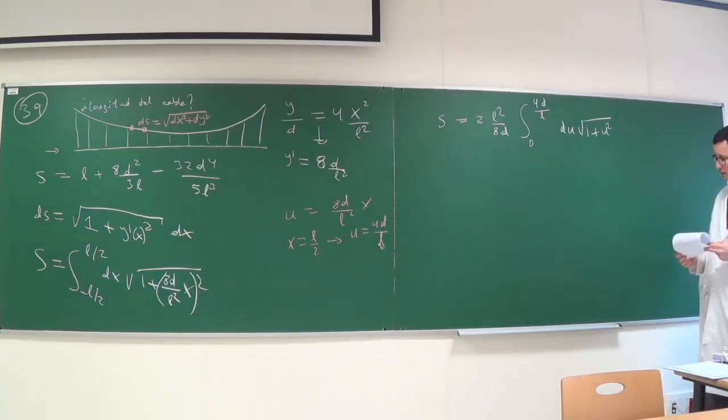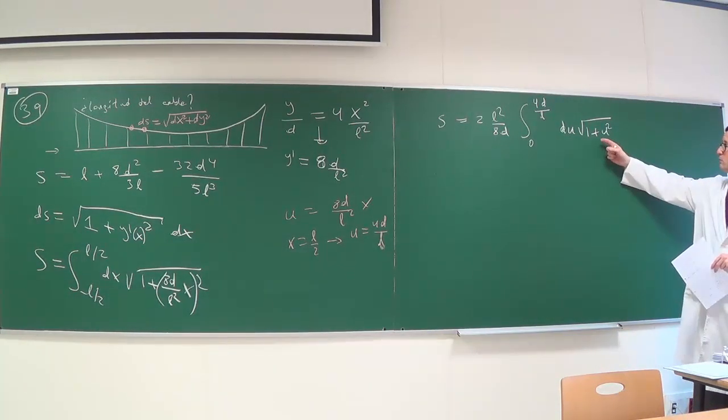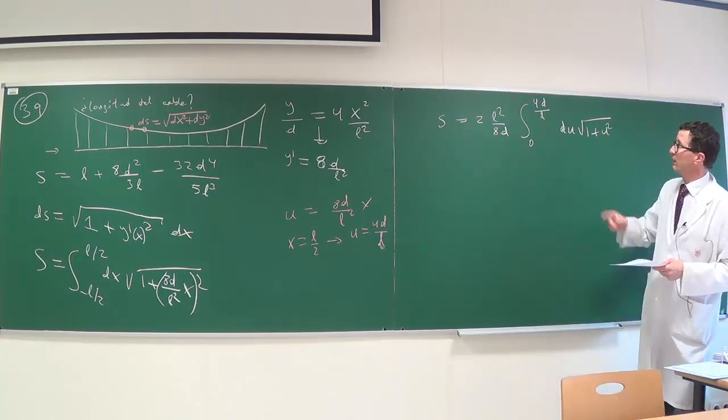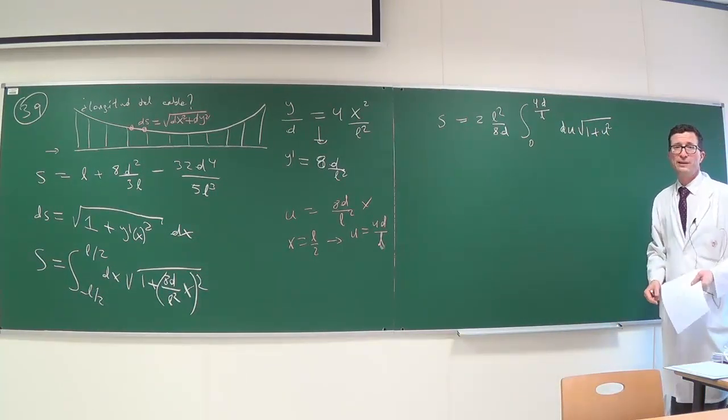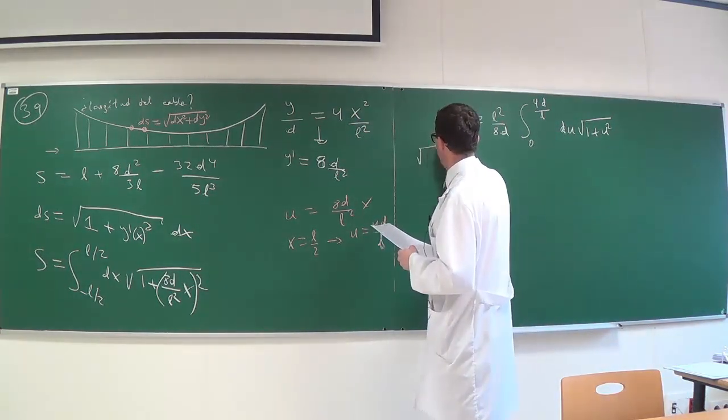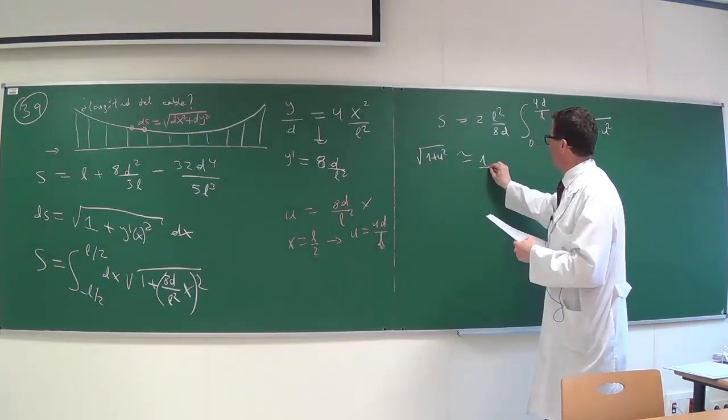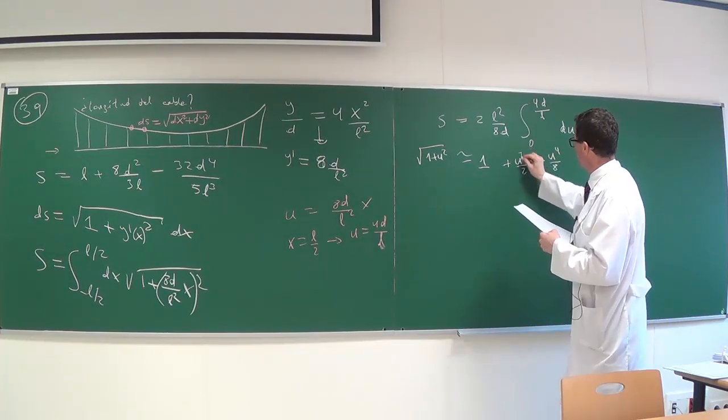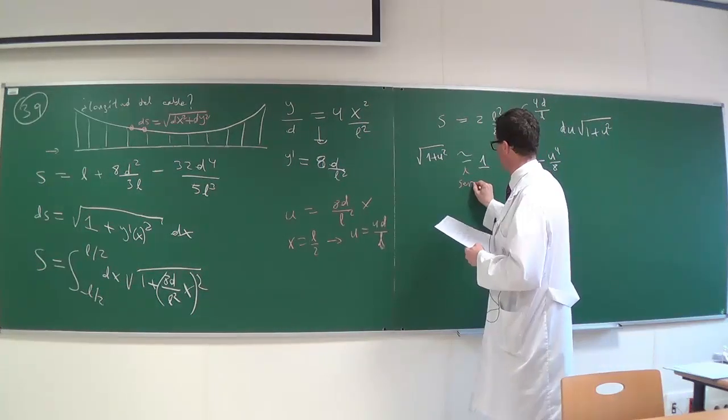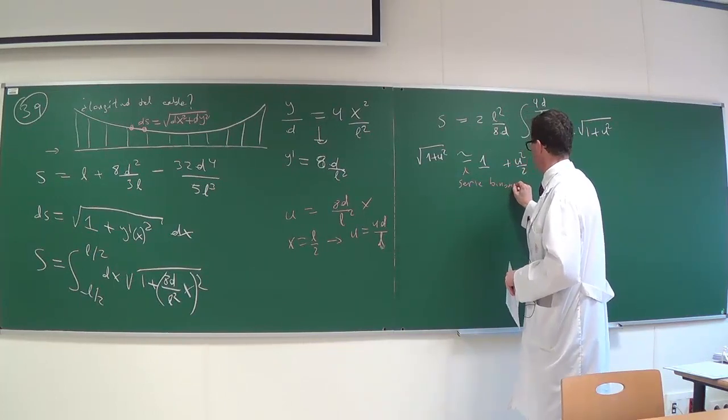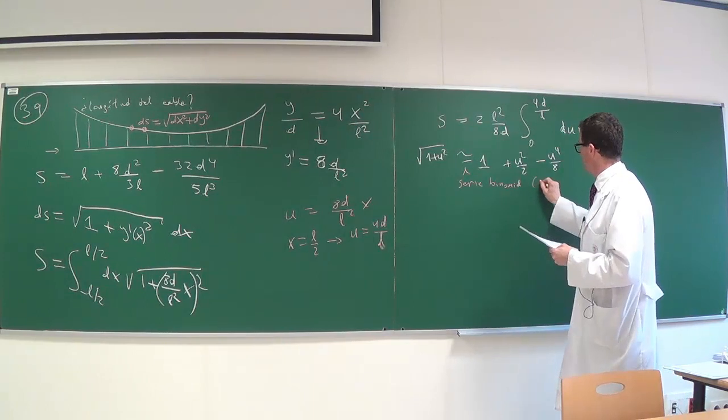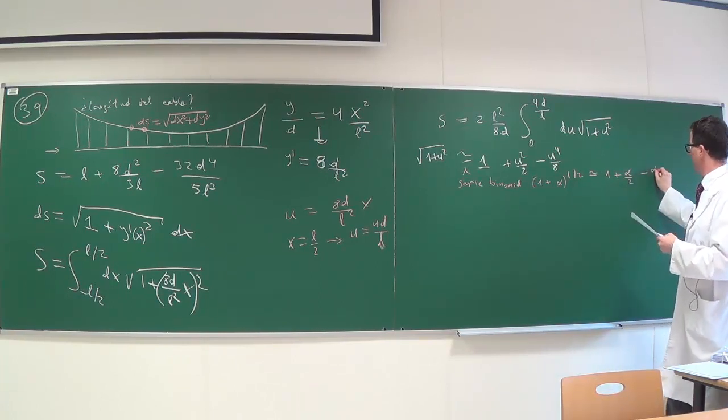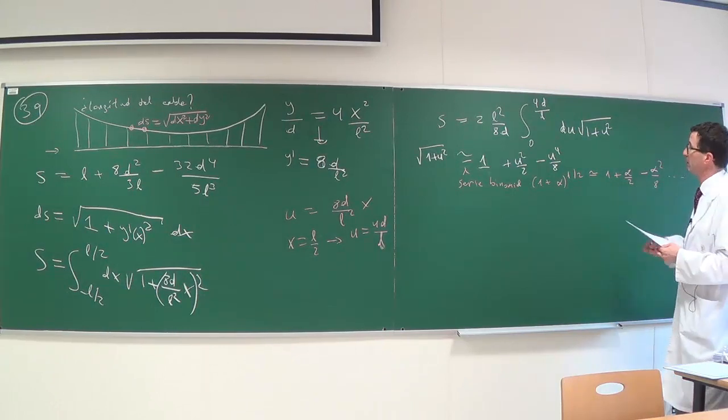So the length becomes 2 times L² divided by 8D with that change of variable, where that constant comes from the differential of X, times the integral between 0 and 4D divided by L, differential of U, square root of 1 plus U squared. And we now have the problem of the cable length reduced to the algebraic integral of a square root that can be calculated exactly as a hyperbola. But in this problem it is asked, instead of getting the exact calculation, to continue using a Taylor series.